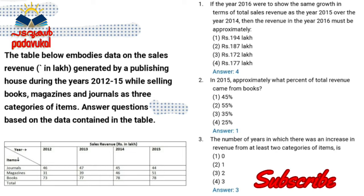From 2012 to 2015, let's look at the journal revenue. In 2012, it is 46 lakhs. In the magazine category for 2012, it is 51 lakhs.